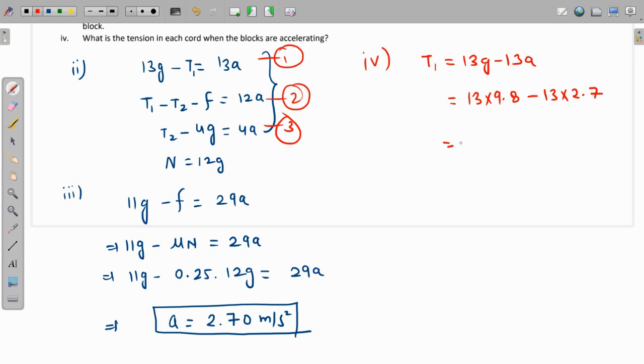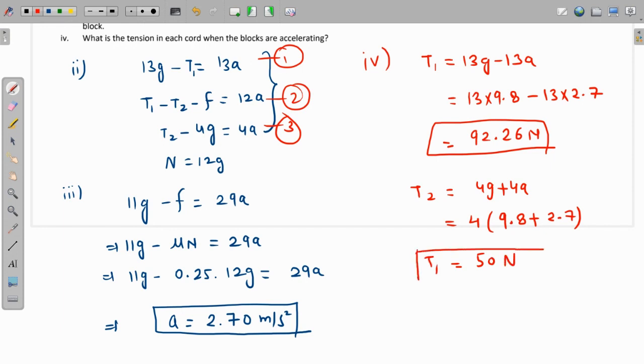And likewise, using equation 3, the value of T2 is 4g plus 4a. So 4 is taken out, we are left with g plus a. G is 9.8 and a is 2.7, so this value comes out as 50. So this value is 50 Newtons. Thank you.